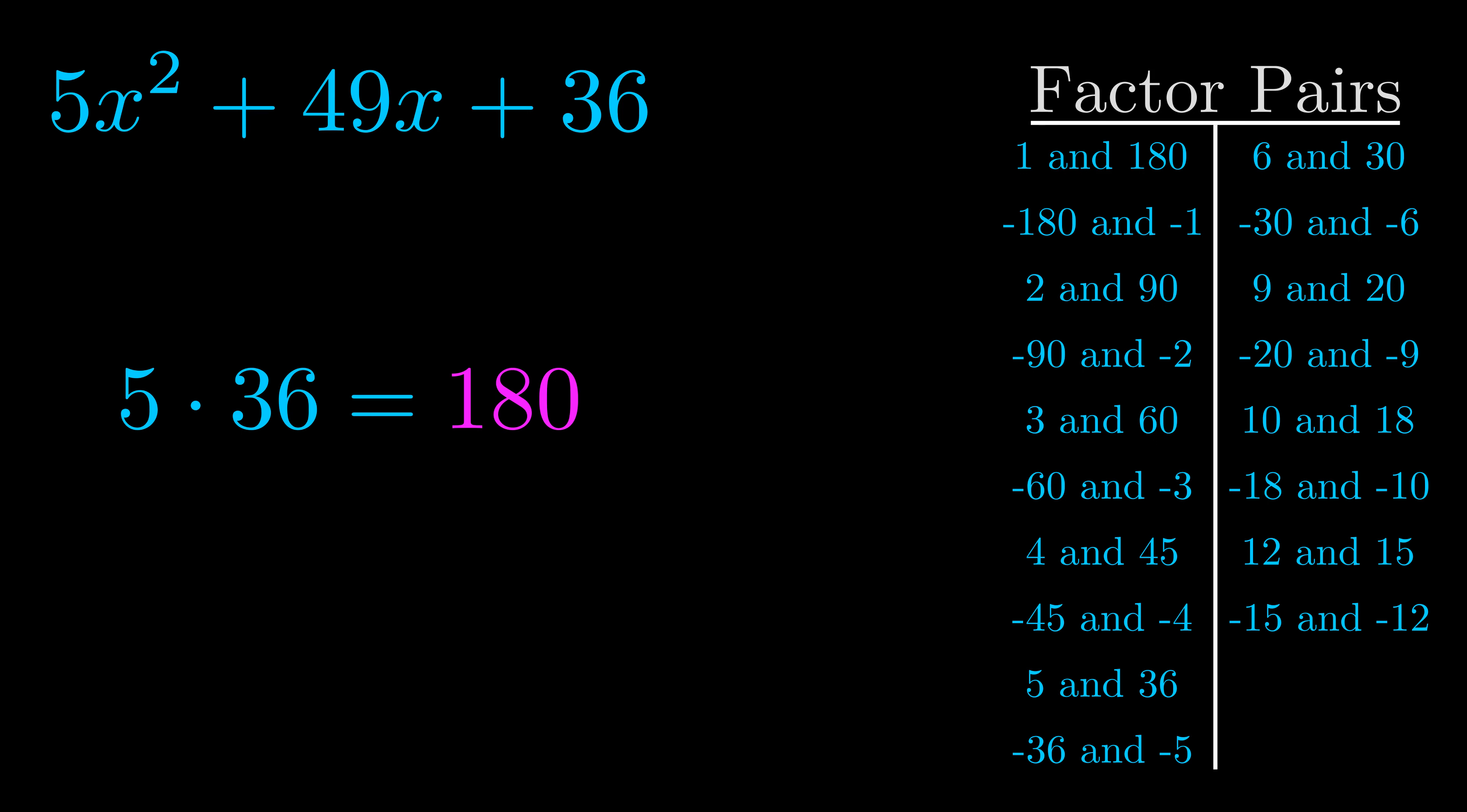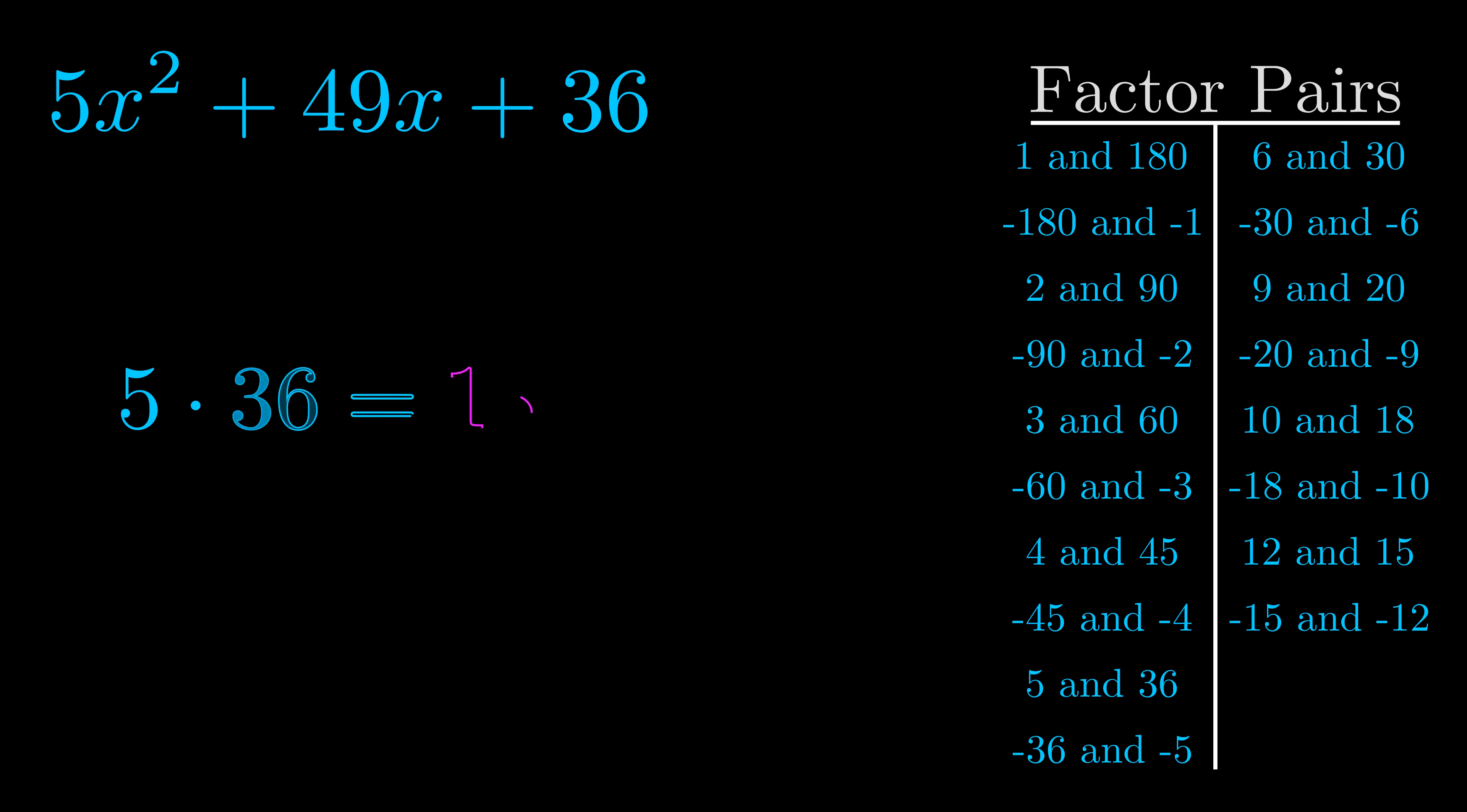Now once you have these factor pairs the goal is to find which of these pairs adds to the b value. The b value is the coefficient on the x term. That's the middle term, the one that we haven't done anything with yet. And really this is the only factor pair that we need.